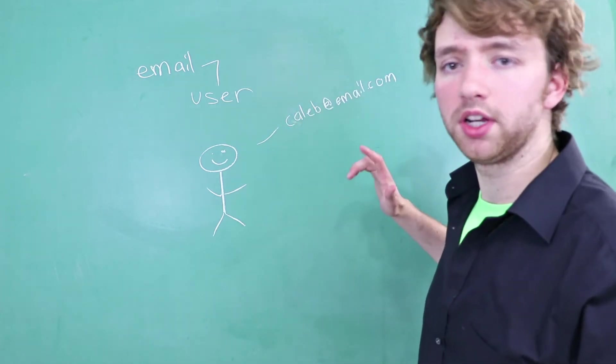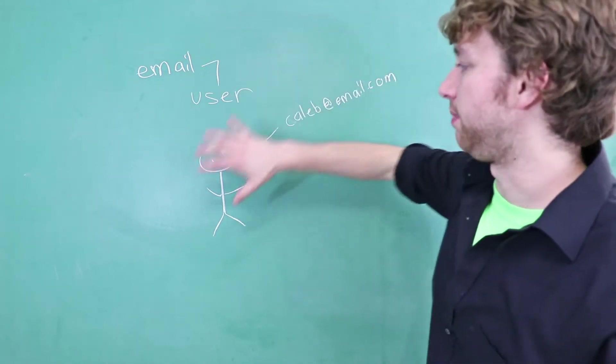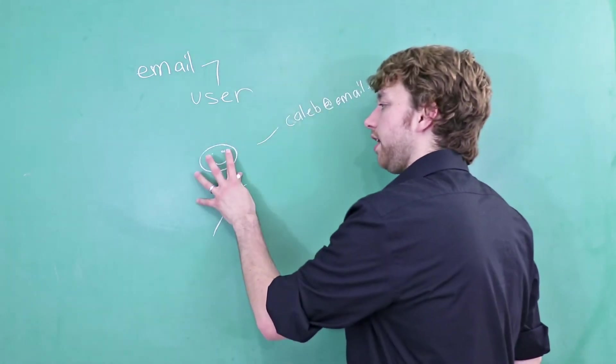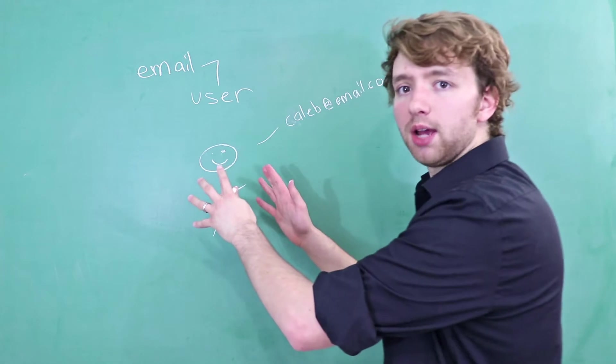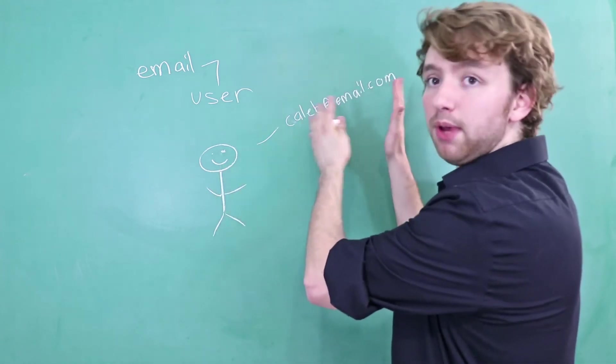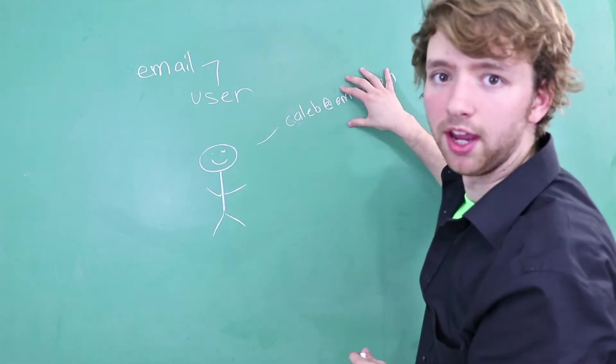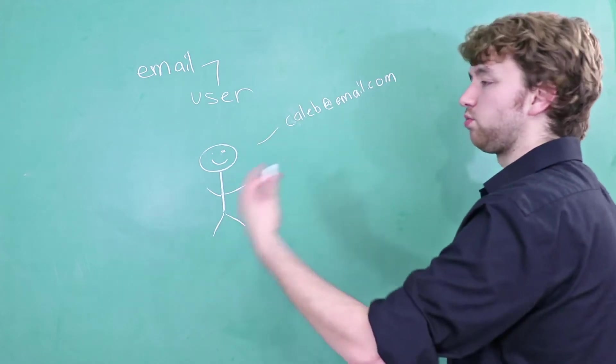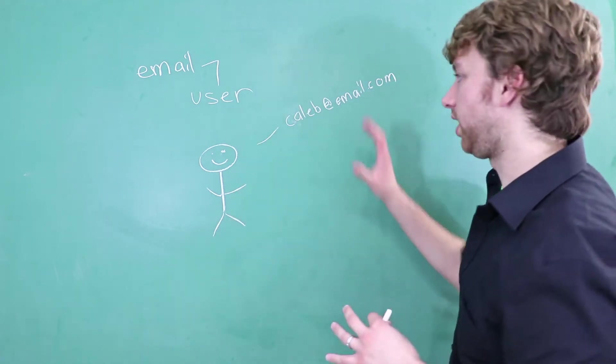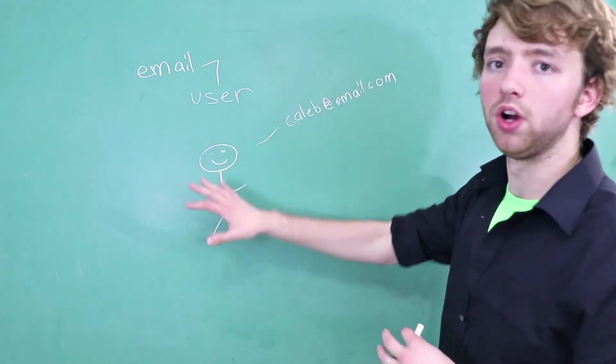The term one-to-one comes up because we have one attribute describing one entity. This one entity is being described specifically in email terms by only one email. So in a one-to-one relationship, you can only have one email for one user.